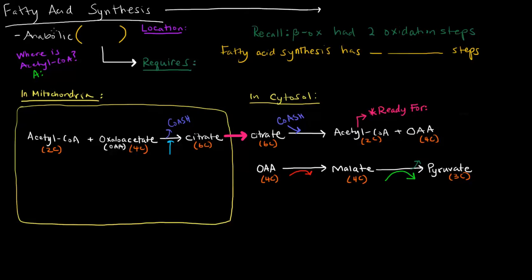In this video, I want to talk about a general overview of what's supposed to happen in fatty acid synthesis without actually talking about the actual reactions. Beta-oxidation was breaking down fatty acids, so here we're talking about building them instead. This is an anabolic process.